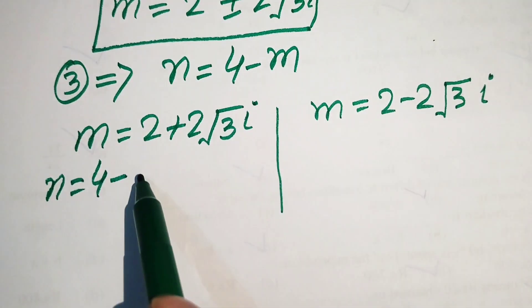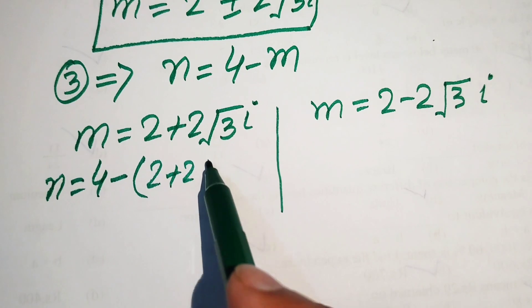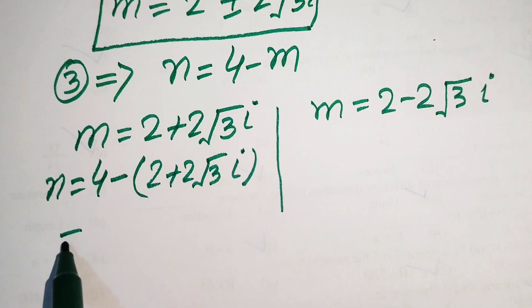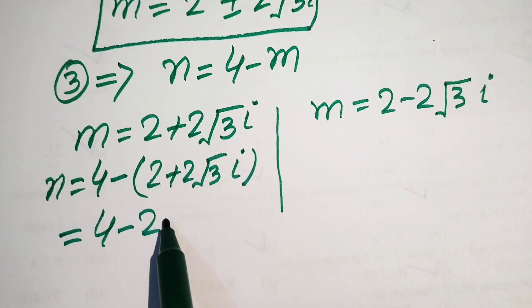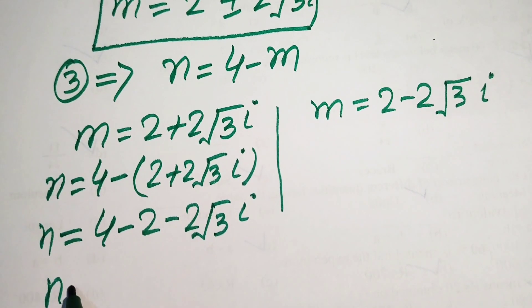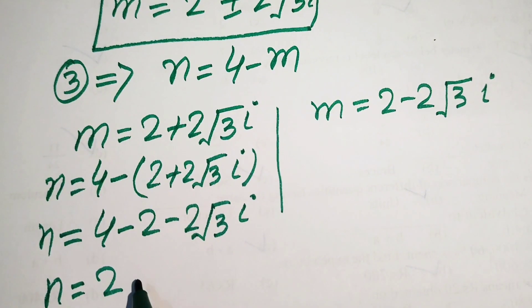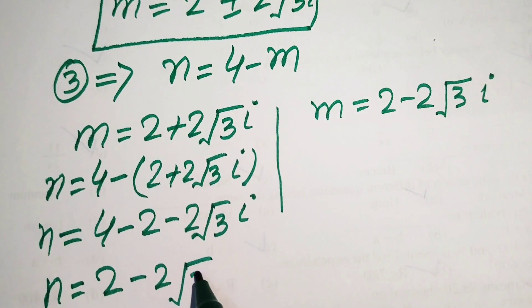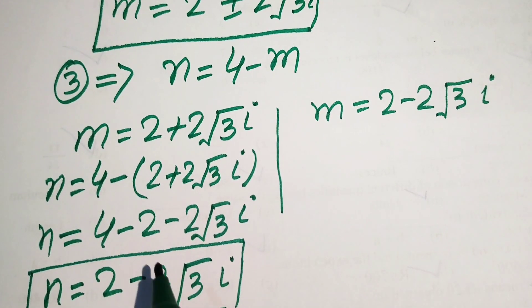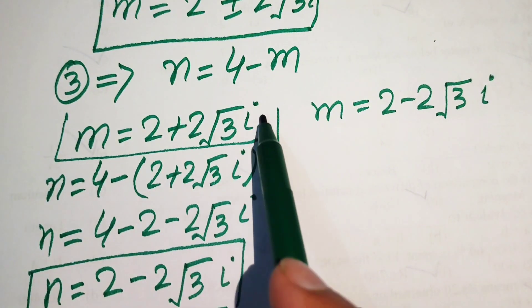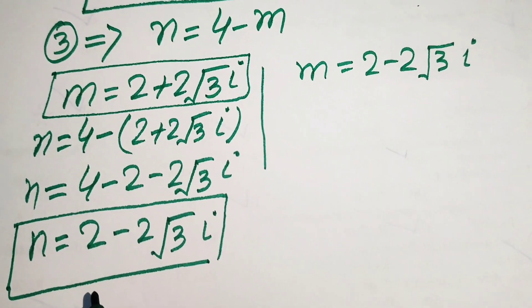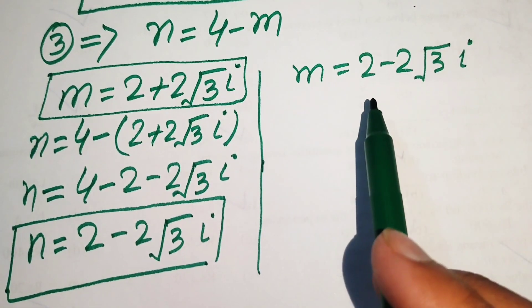Substituting the first value of m into n equals 4 minus m: n equals 4 minus (2 plus 2 square root of 3 iota). Multiplying the minus sign through gives 4 minus 2 minus 2 square root of 3 iota. So n equals 2 minus 2 square root of 3 iota. This is n corresponding to the first value of m, forming our first solution pair.